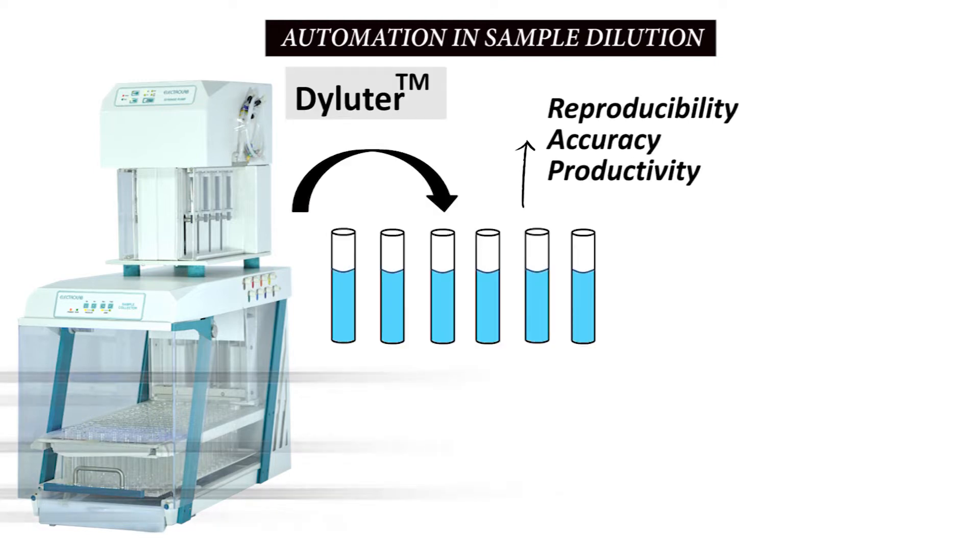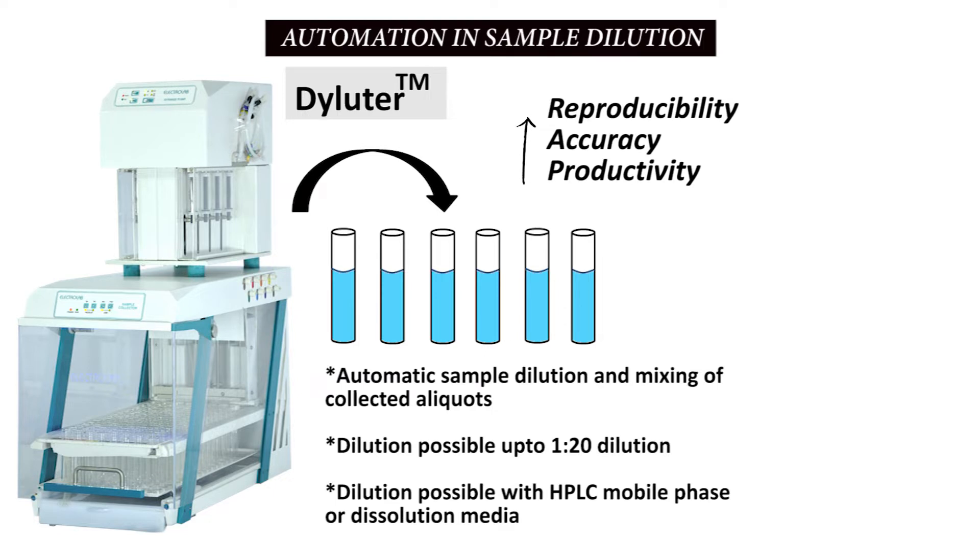Introducing our diluter feature in the autosampler, which allows online sample dilution of up to 20 times. The auto-mixing of the diluted samples ensures uniform sample concentration in the collection tube, which can be directly analyzed using UV or HPLC.